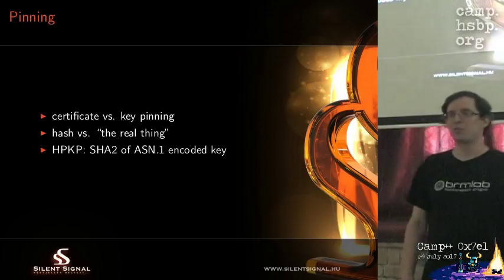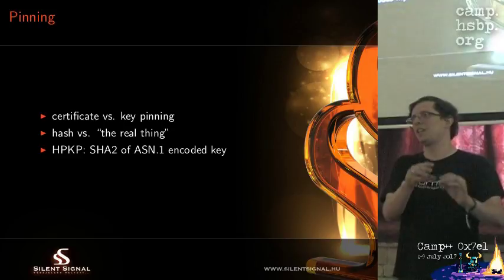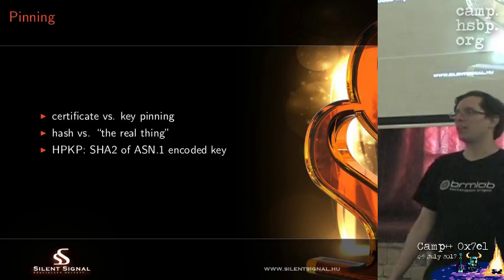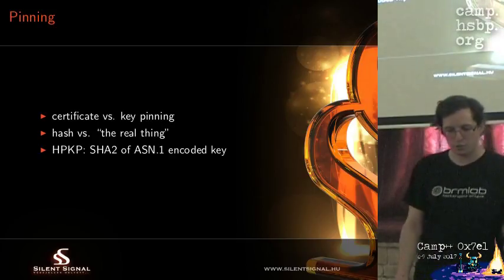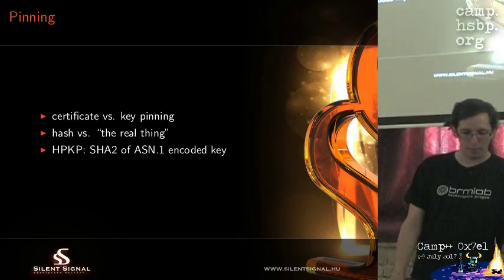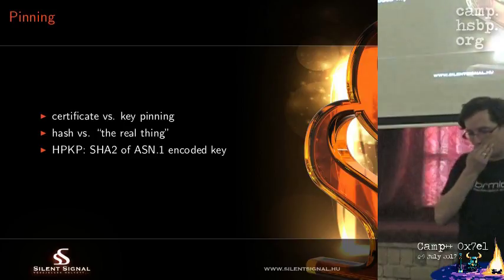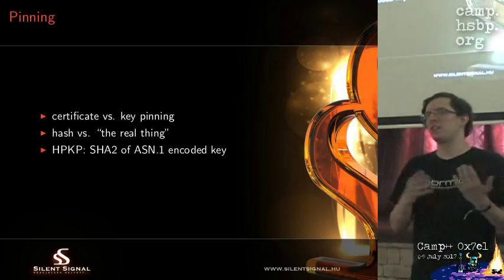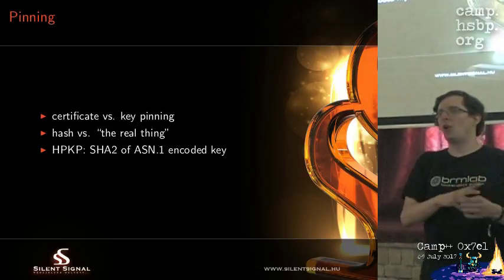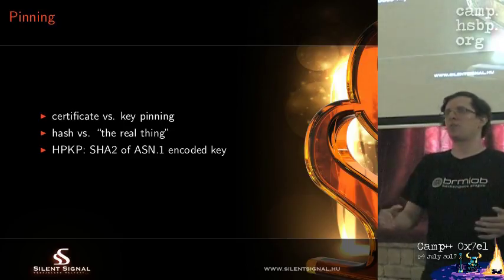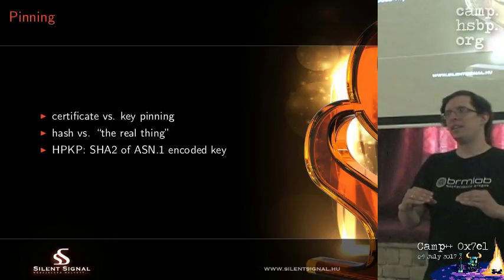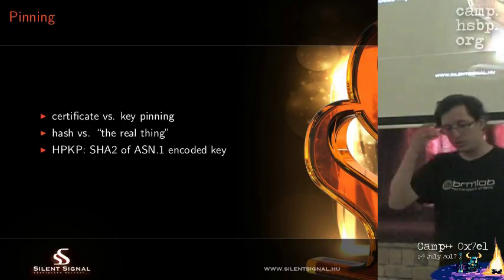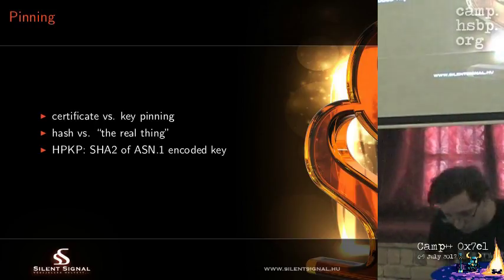In their smartphone applications, Twitter said the application would contain the public key and certificate so it cannot be confused by a man-in-the-middle. Later the web got its own version called HPKP — HTTP Public Key Pinning. It's a bit like HSTS in that you have to give a long timeout for it to work — it only makes sense if the user later revisits the site within that timeout. In this case they typically use the hash of the ASN.1-encoded key.